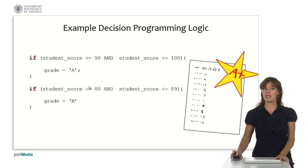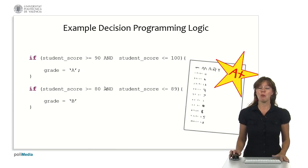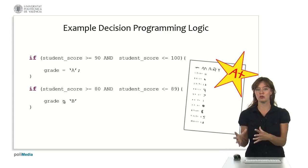If the student score is greater than or equal to 80 but less than or equal to 89, then the grade is a B. We use if statements to decide what the outcome of our code is.